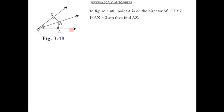Now let us solve one example based on this theorem. The diagram is given and the question is: in this figure, point A is on the bisector of angle XYZ. If AX is equal to 2 cm, then find AZ. As we can see in the diagram, angle XYZ is given and ray YA is the angle bisector of angle XYZ.